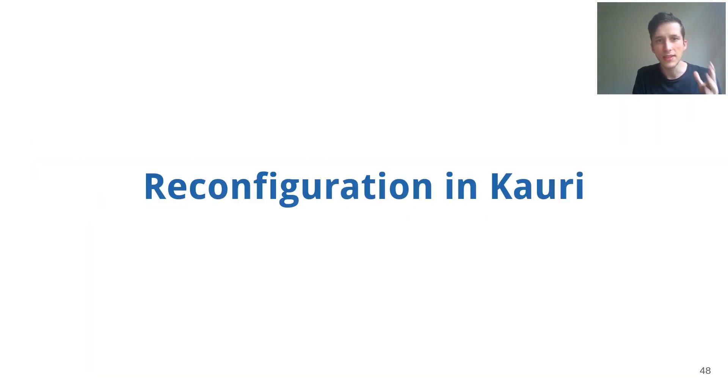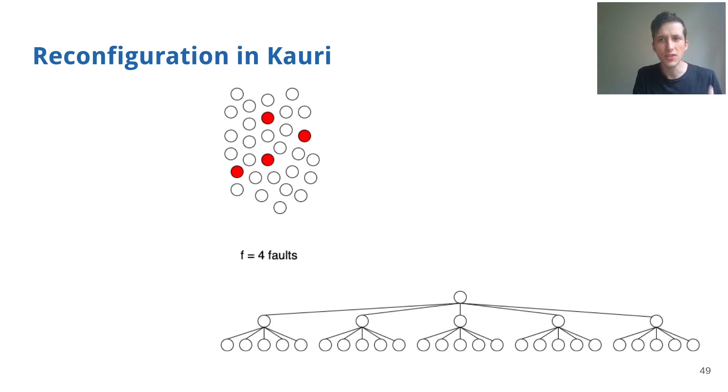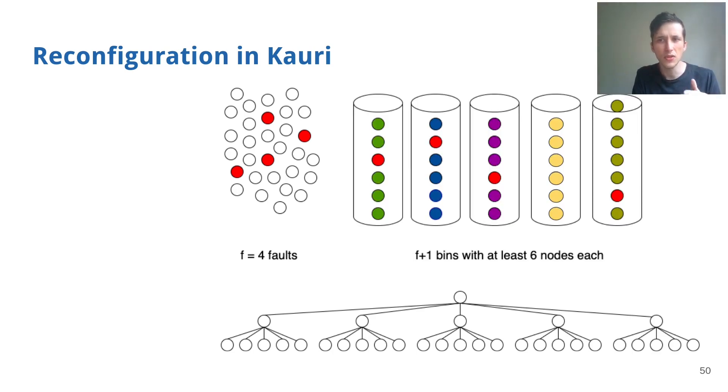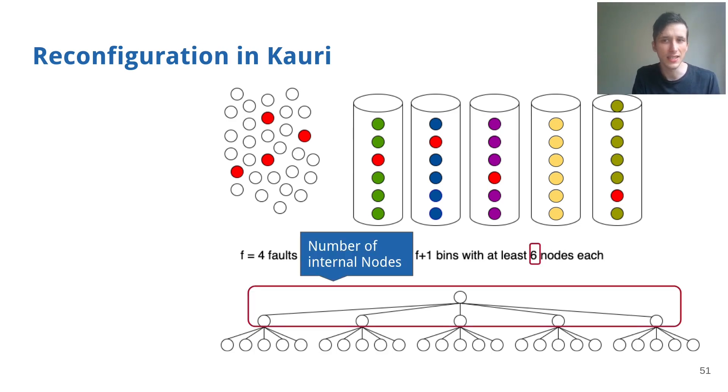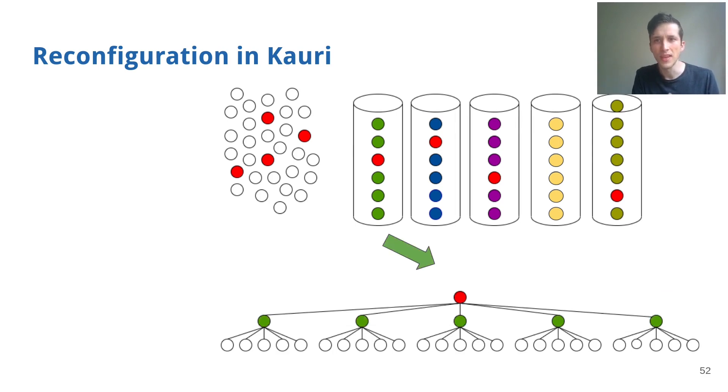Let's start with how we deal with reconfigurations in Kauri. We want to construct a tree without any faulty internal nodes to achieve consensus. We start from a set of nodes where a small subset is faulty, and we divide the nodes into bins of roughly the same size, where each bin is at least the size of the number of internal nodes, so six or more in this example.